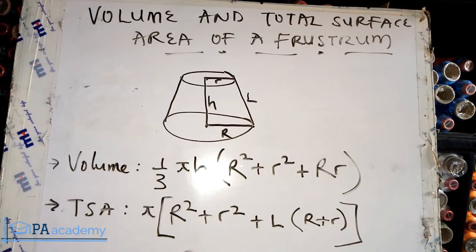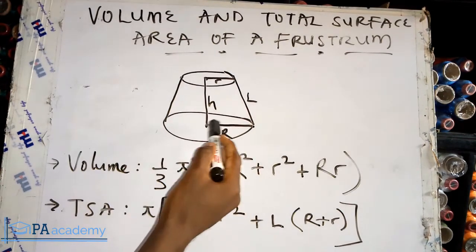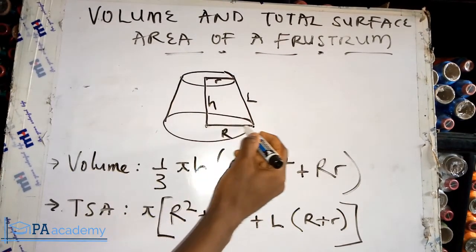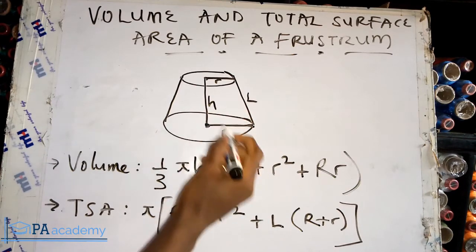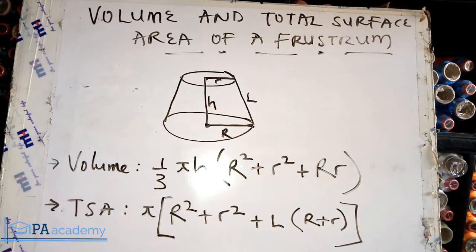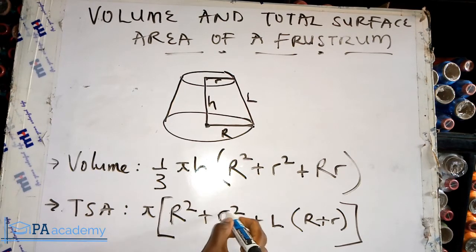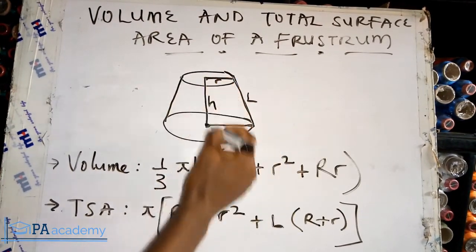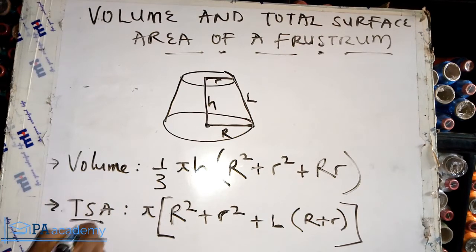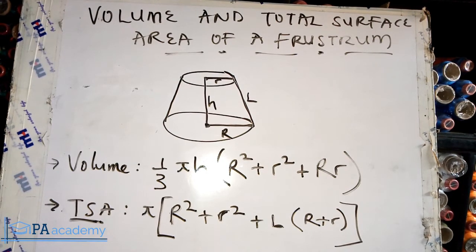The capital letter R represents the radius of the base or the larger circle. The small letter r is the radius of the smaller circle. The letter l is the slant length, and h is the height. So this is the formula for the volume and this is the formula for the total surface area.